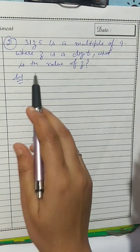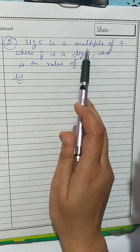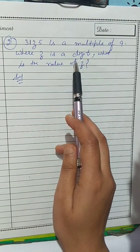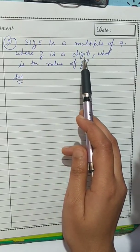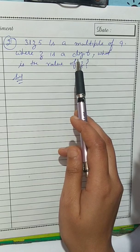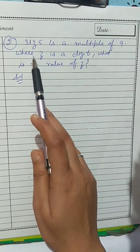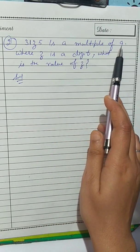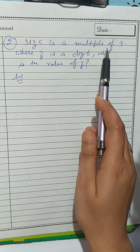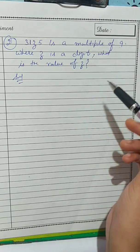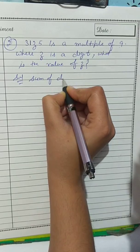Next, question 2: 31z5 is a multiple of 9 where z is a digit. What is the value of z? Again, we need to find the missing digit z in the number 31z5, which is a multiple of 9. We will find the sum of digits.